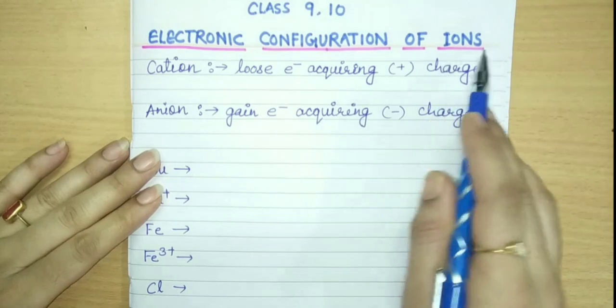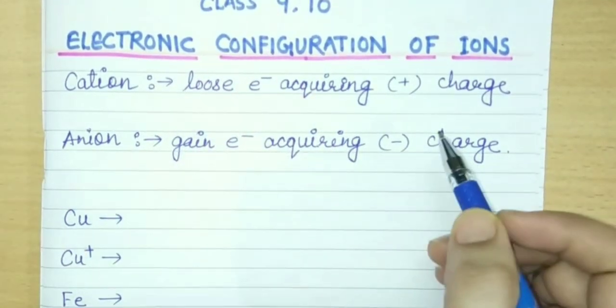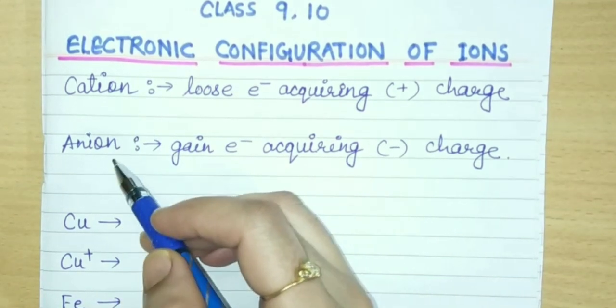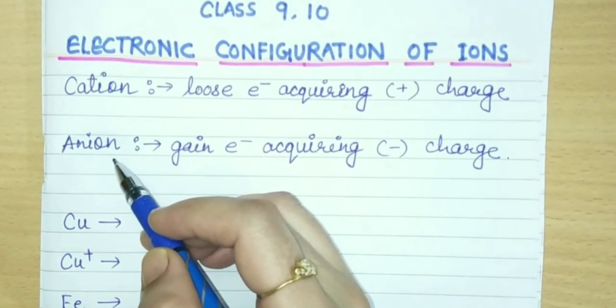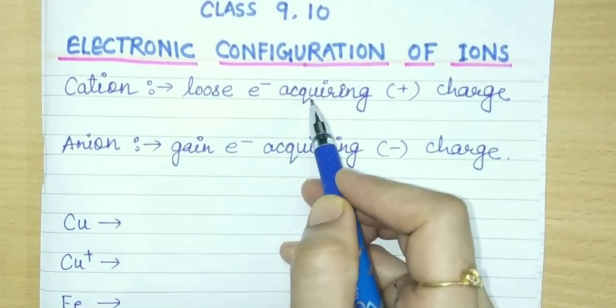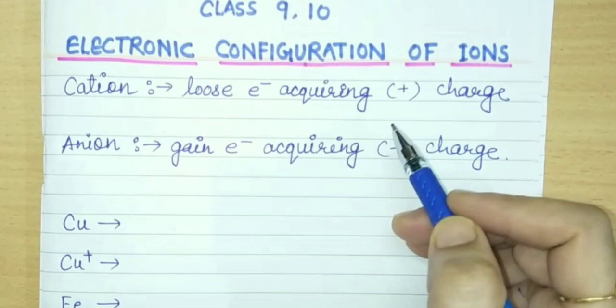Electronic configuration of ions. When you have to write the electronic configuration of ions, you should know what is cations and what is anions. Let's take cations. The ion which loses electron acquiring positive charge.